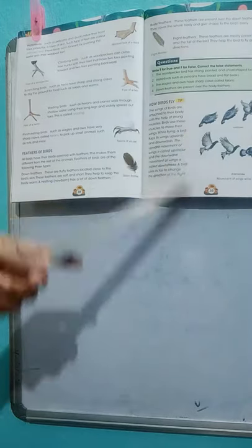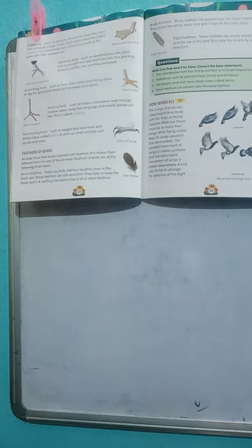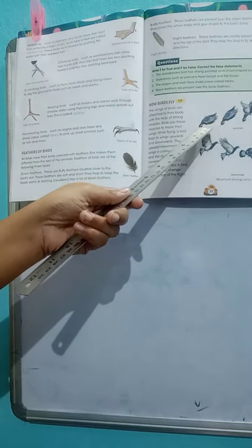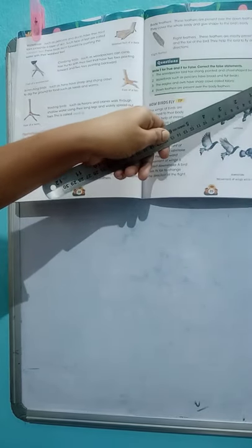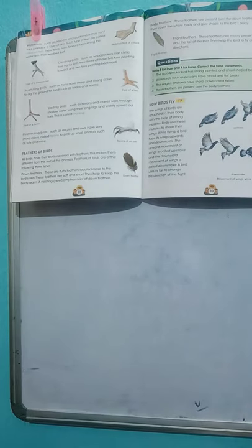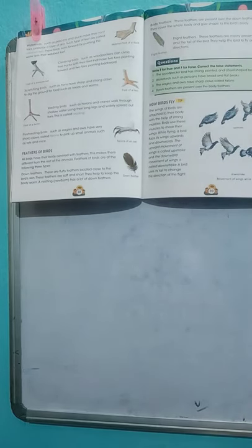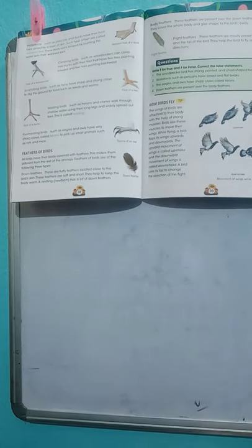Now the term for flight feathers - with the help of these, birds fly in the sky. These feathers are mostly present on the wings and the tail of the birds. They help the bird to fly and change direction. Their tail helps them to change direction, just like in fish the tail helps them change direction, and in birds also the tail helps them change direction.